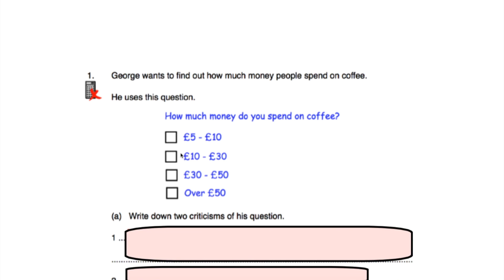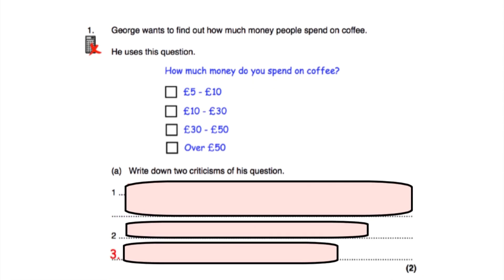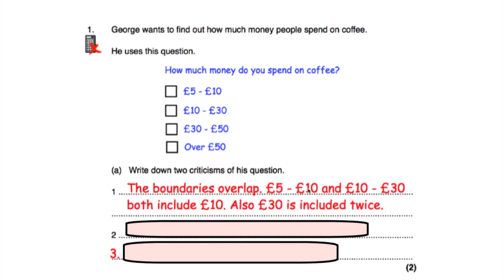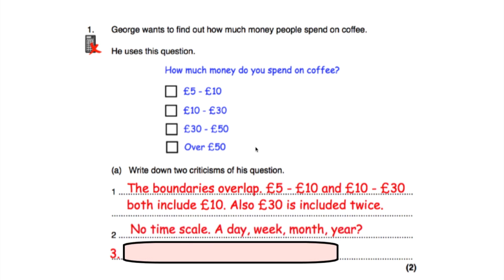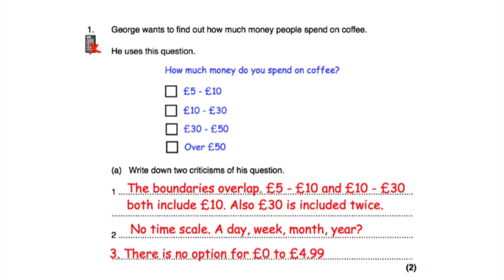If I spent £10 a week on coffee, I could tick either the first or second box, and likewise for £30. So the boundaries overlap and they shouldn't. They should be clear so that for £10 you know exactly which box to tick. Also, there's no box for under £5. The two main criticisms are: the boundaries overlap, and there's no time scale — is it a week, a month, a year? A third criticism is there's no option for £0 up to £4.99, so nothing for below £5.